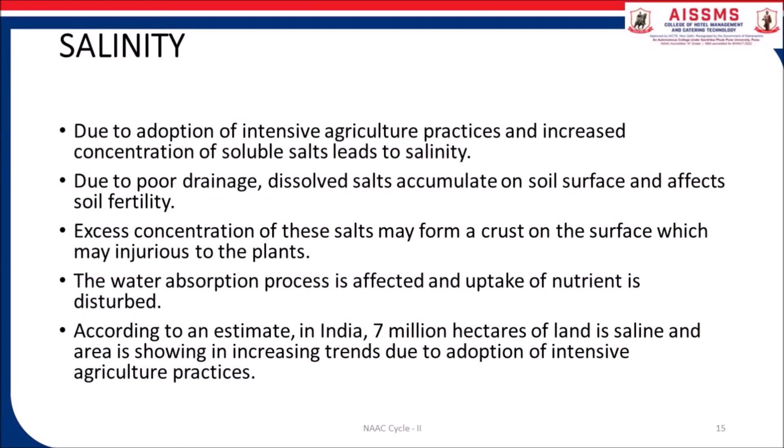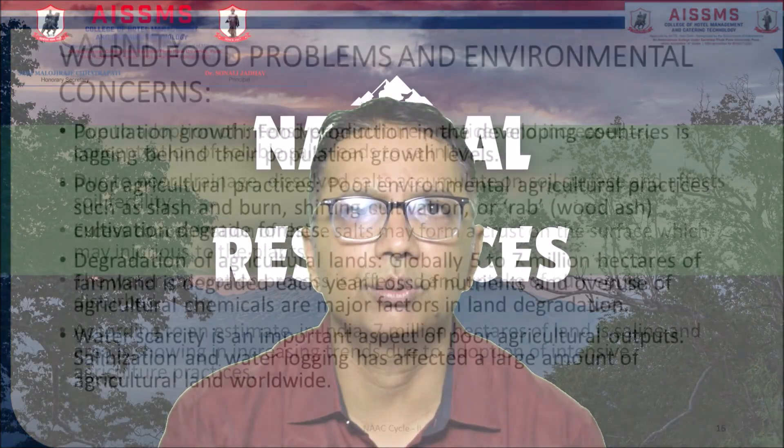Let's understand what is salinity. Due to adoption of intensive agriculture practices, increased concentration of soluble salt leads to salinity, due to poor drainage. Dissolved salt accumulates on soil surface and affects soil fertility. Excess concentration of this salt may form a crust on the surface, which is majorly injurious to plants. The water absorption process is affected and uptake of nutrients drops. According to an estimate in India, 7 million hectares of land is saline and the area is showing an increasing trend due to adoption of intensive agriculture practices.